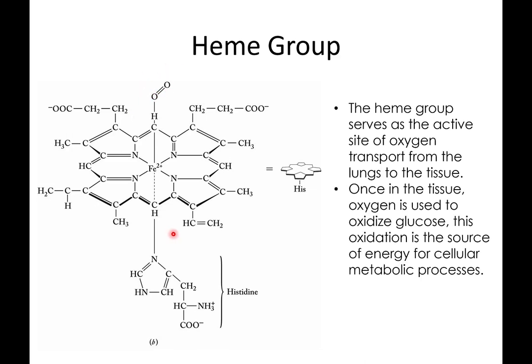The heme group serves as the active site of oxygen transport. Hemoglobin picks up oxygen in the lungs and releases it in the tissue. Once in the tissue, the oxygen is used to oxidize glucose, and this oxidation is the source of energy for cellular metabolic processes.